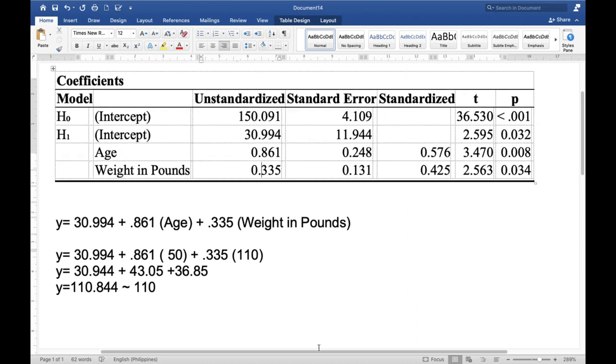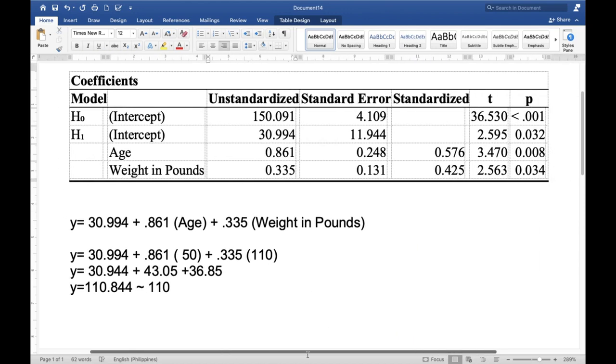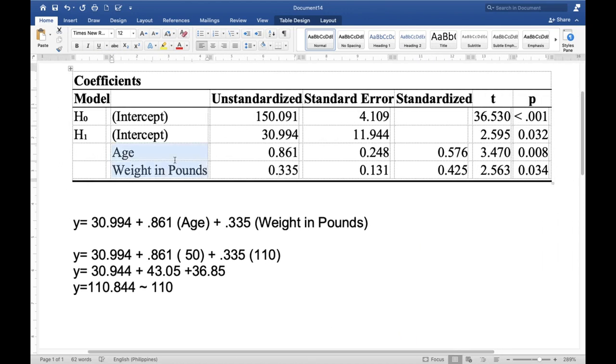So for us to fully appreciate these figures, let's do a sample simulation. And by the way, if we are asking if these two independent or predictor variables are statistically significant, the p-value of 0.008 and 0.034 confirm that these two independent or predictor variables are statistically significant or they influence significantly to our dependent variable systolic blood pressure reading.